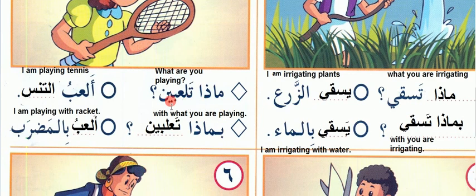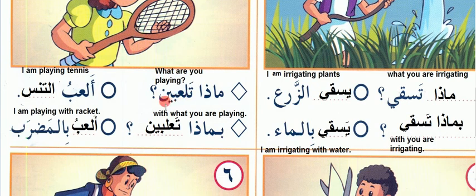Mazat Talibin — what you are playing? Al-Abu Al-Tennis — I am playing tennis. Bimaza Talibin — with what you are playing? When we say 'you' it means this is the second person, so Talibin appears everywhere for you. Al-Abu Bil-Mazrab — I am playing with the racket. Mazrab is the racket.